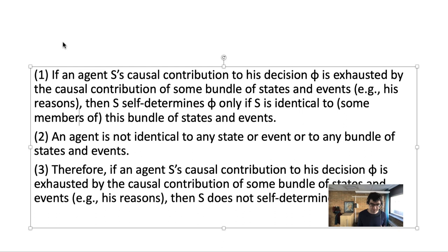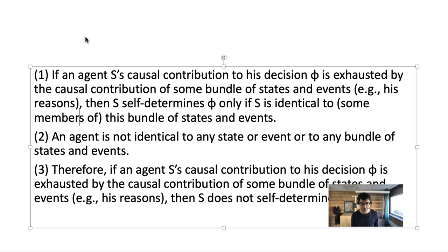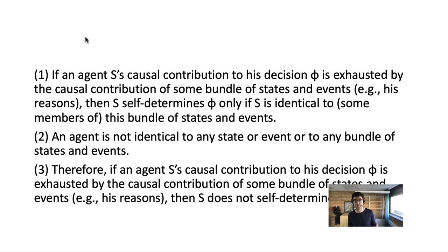The second premise says that an agent is not identical to any of his mental states. This seems intuitive because you could lose many of your beliefs and desires and still exist — which suggests you're not identical to any of them. But if your contribution to an action is exhausted by your mental states, and yet you're not identical to those mental states, then it follows that you're not self-determining your decision. Your decision is determined by these mental states, but you're not identical to them.